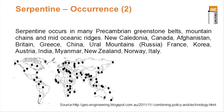It occurs fairly commonly, and the location of these deposits is fairly well spread. The important thing for you is that your deposit is near a market, because there's no point finding one in central Mongolia or central Australia if you're trying to supply the market in New York, for instance. So location is important.